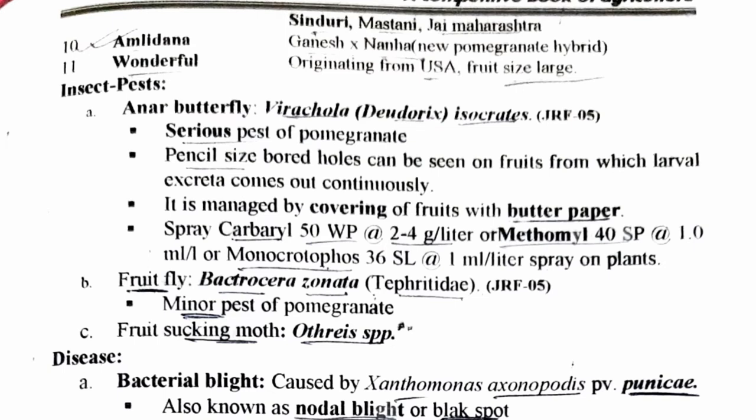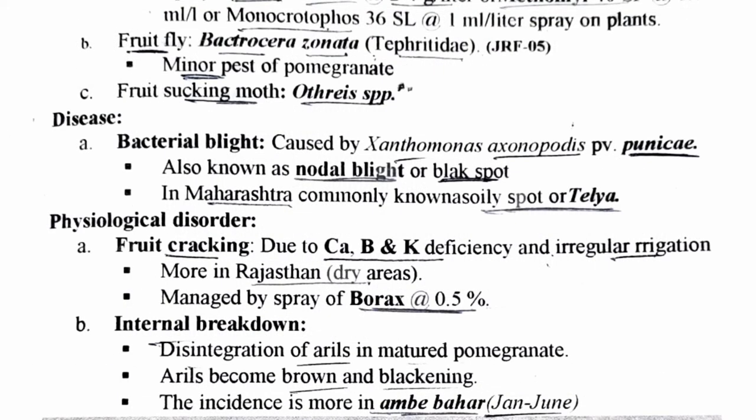The next pest is fruit fly, scientifically known as Bactrocera zonata, belonging to family Tephritidae — this was asked in JRF 2005. It is a minor pest of pomegranate. Third is fruit sucking moth, scientifically known as Othreis species. Disease: bacterial blight, caused by Xanthomonas axonopodis pv. punicae. It is also known as nodal blight or black spot; in Maharashtra it is called oily spot or telia.